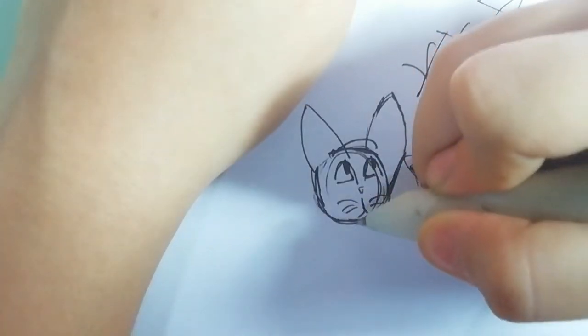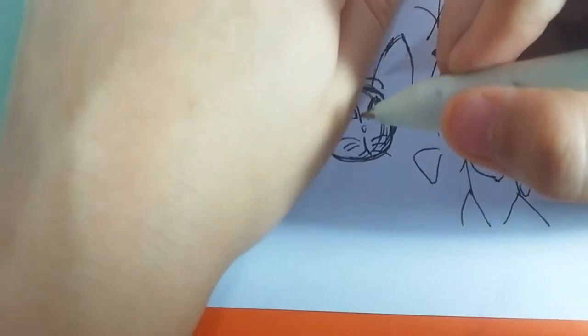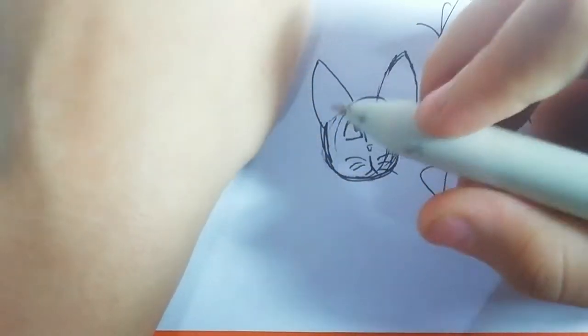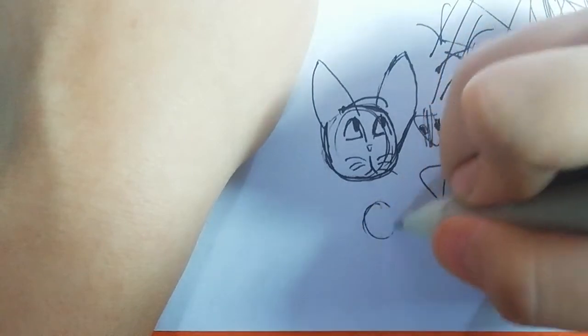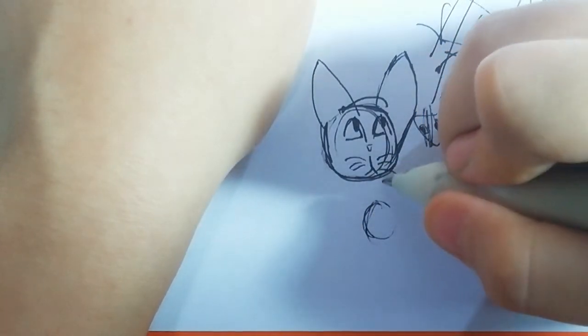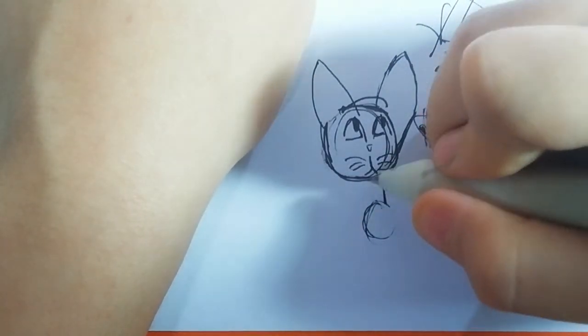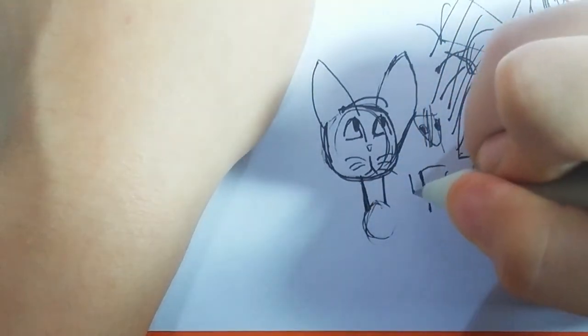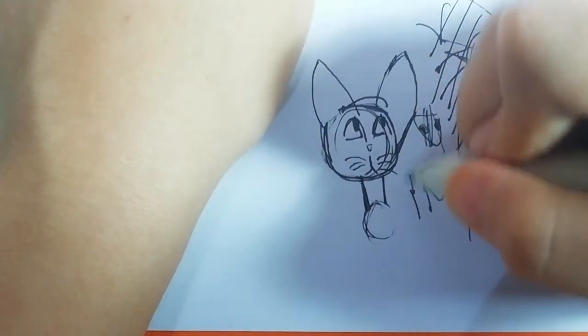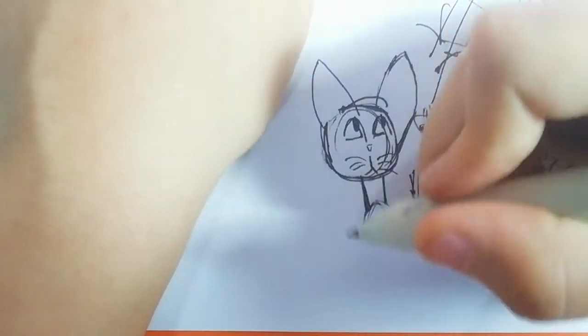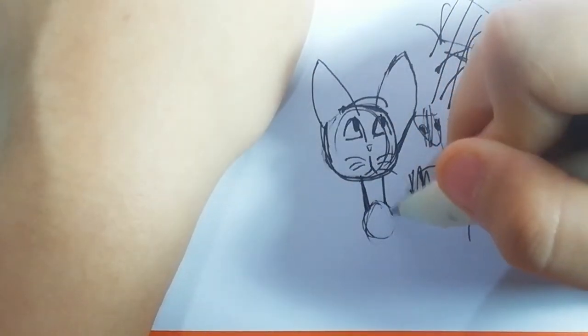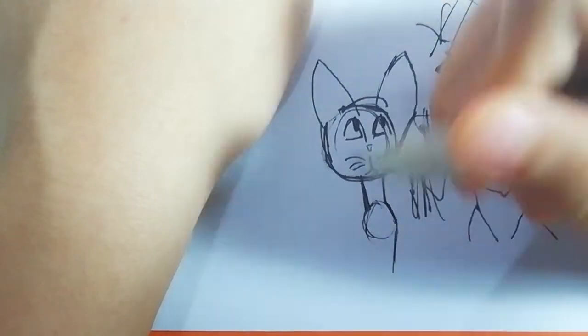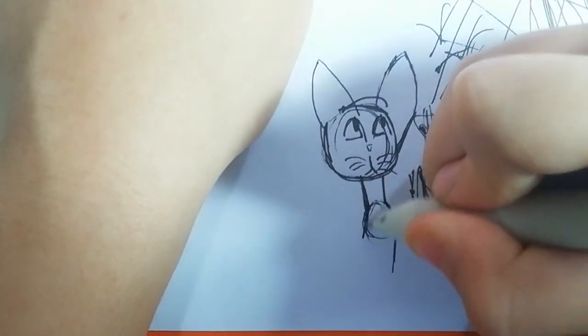Moving on to the body. You're gonna draw a little circle to be the chest. Now you're just gonna draw the neck. You could make it short or long or anything. Just because this is an Egyptian cat that we're drawing, you could just do it like that.